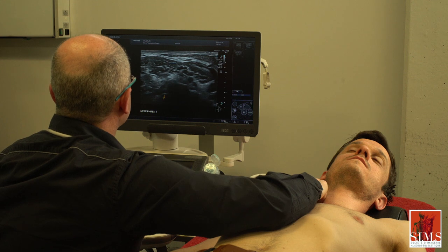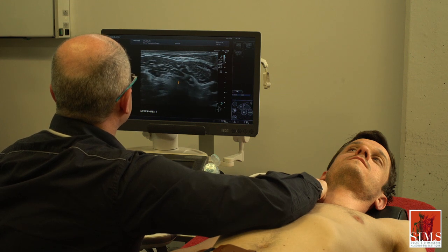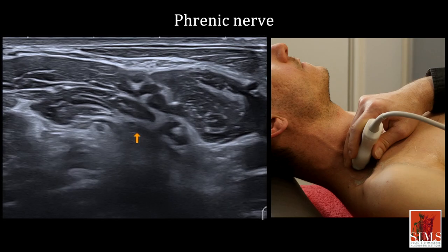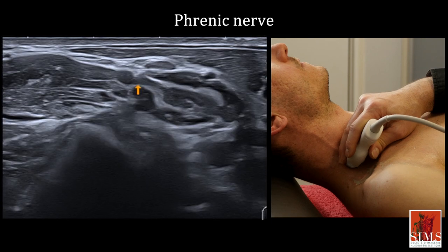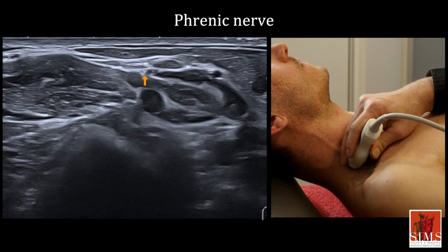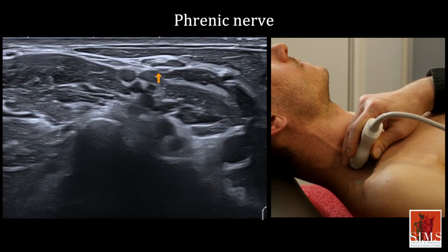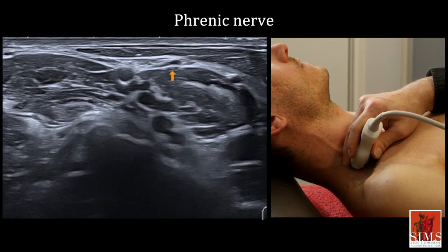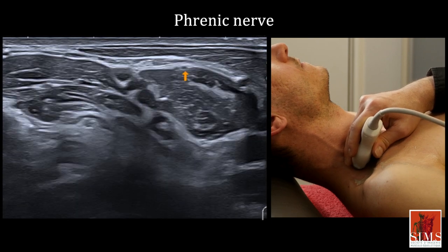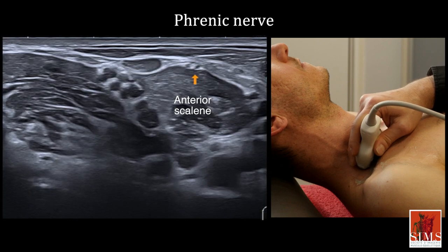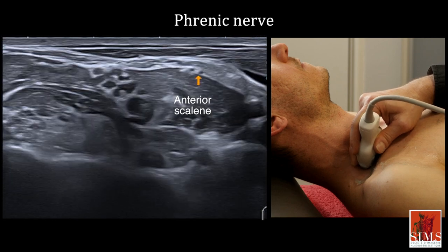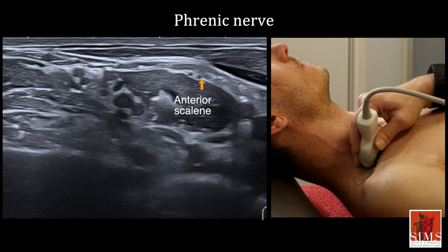I am now going to show you the phrenic nerve, which originates from C4, emerges from the interscalene space, and traces a half circle on the superficial anterior part of the anterior scalene. You see, we managed to follow it quite far.